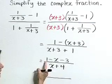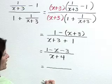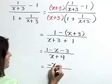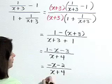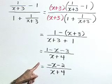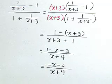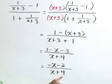As a last step, combine the 1 and negative 3 in the numerator, giving negative x minus 2. In the denominator, x plus 4. So our simplified form of this complex fraction is negative x minus 2 over x plus 4.